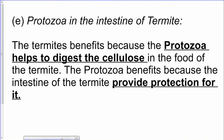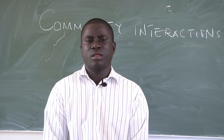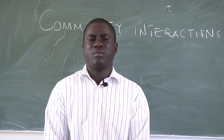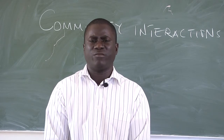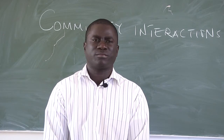Another example of mutualism: protozoa in the intestine of termites. Termites eat plant materials, wood, and paper. The protozoa found in the intestines of these termites help to digest cellulose. The termites benefit because the protozoa digest the cellulose in their food, while the protozoa benefit because the intestine of the termite provides protection for it.